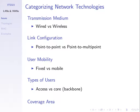Some networks are for human users to access, whereas other network technologies carry the data of other networks — we talk about core networks and backbone networks. Some networks cover different geographical areas: some for communications across centimetres or meters, some across large distances. We'll go through the first three or four categories quickly, and then spend a bit more time on coverage area.